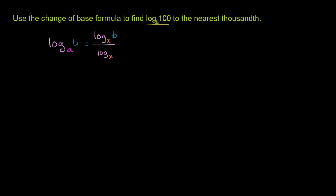The reason this is useful is that we can change our base. Here our base is a, and we can change it to base x. So if our calculator has a certain base x function, we can convert to that base — it's usually e or base 10. Base 10 is the easy way to go. In general, if you just see someone write log of x without a base, they're implying log base 10 of x.